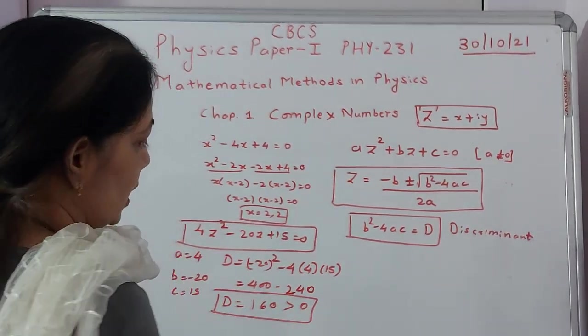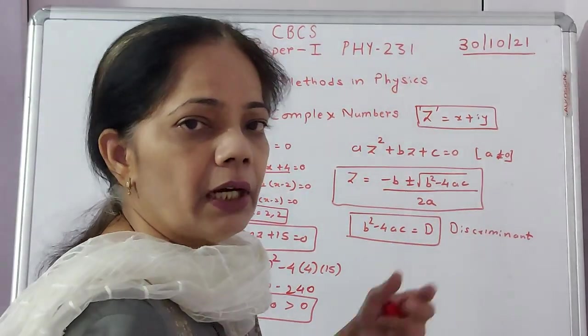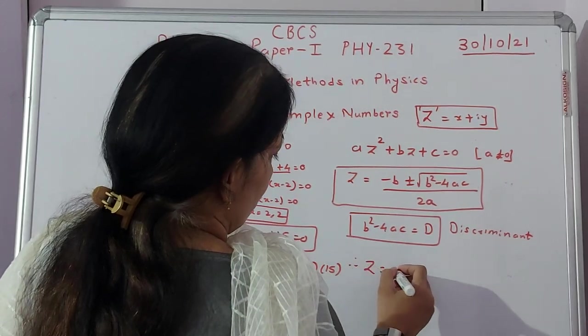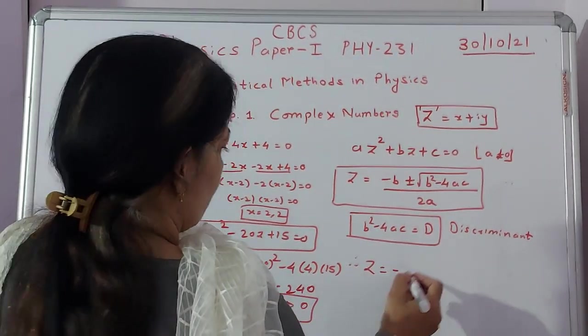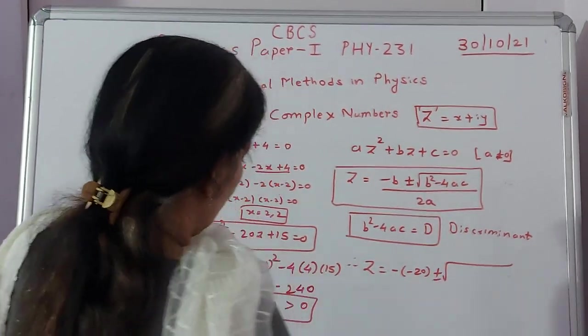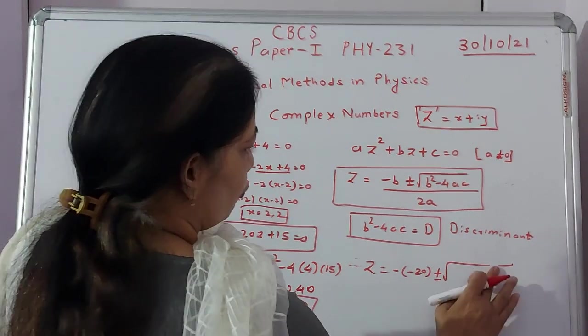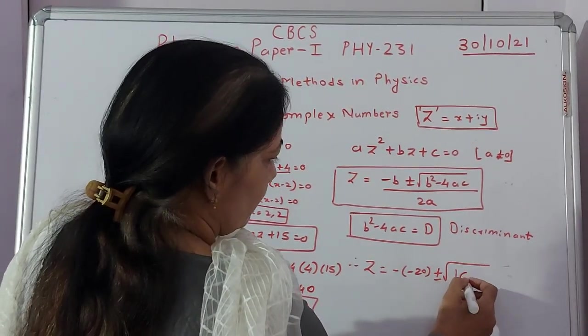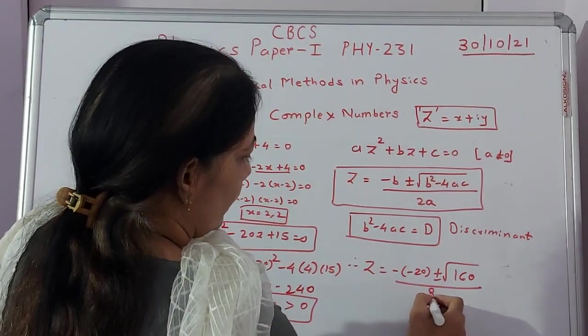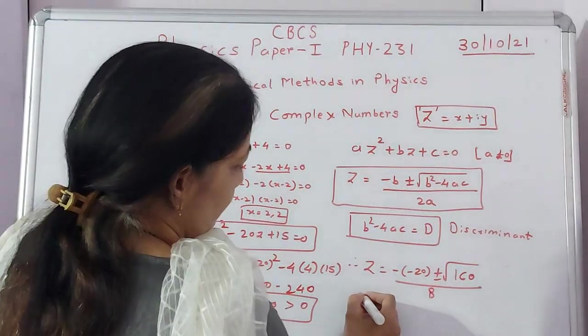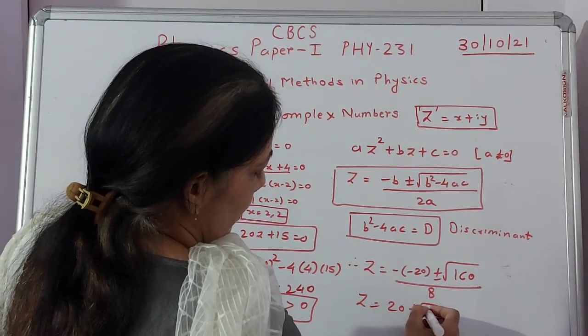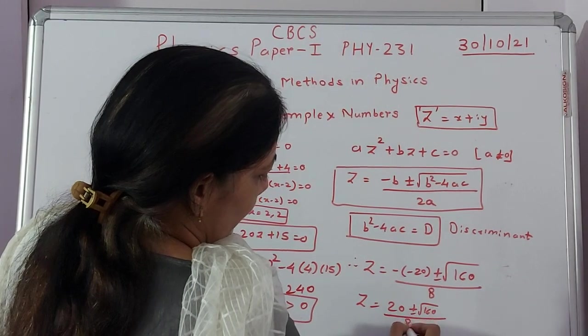So in this case, how will I get the solution? Just put the value over here and try to get the solution. So I can say therefore Z = -B. So how much is B? -20. Plus or minus √(B² - 4AC), that answer turned out to be 160, divided by 2A. How much is A? 4. So I will write here 8. Simplify further, you get 20 ± √160 / 8.